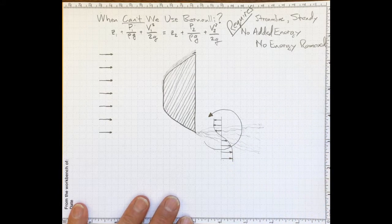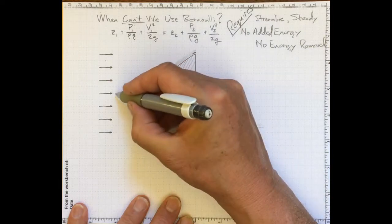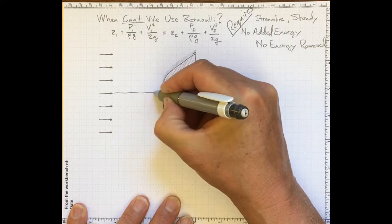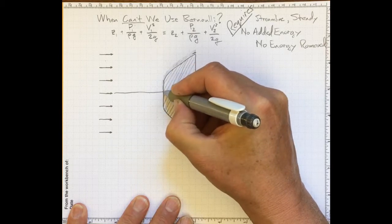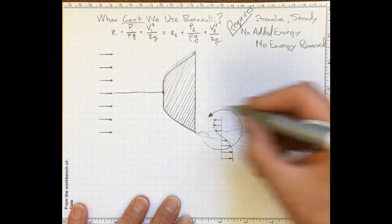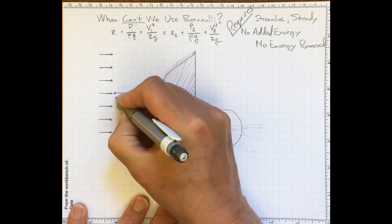Bernoulli's equation applies only on streamlines, so we'll need to draw some streamlines for this flow. If this system is symmetric above and below, then the first streamline I'm going to draw is one that comes right in here and hits right on the front at a stagnation point. So we'll call that point two, and this point upstream, point one.